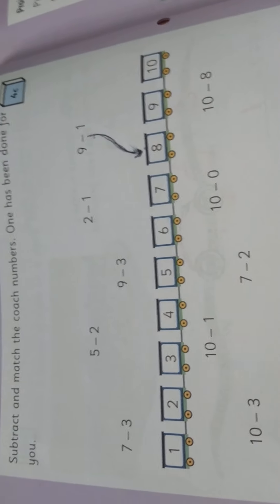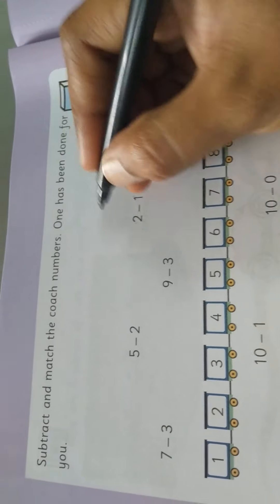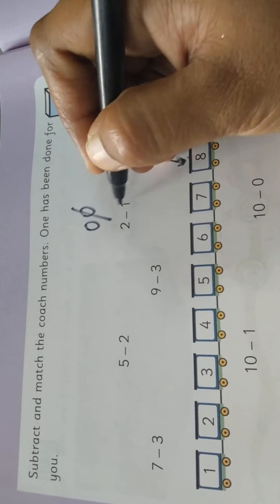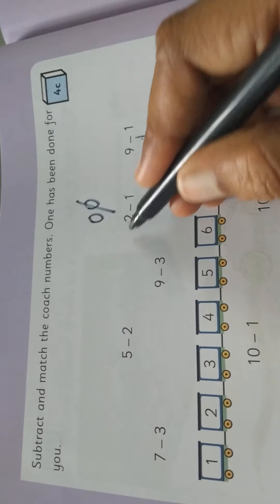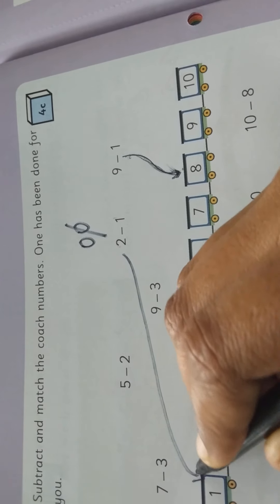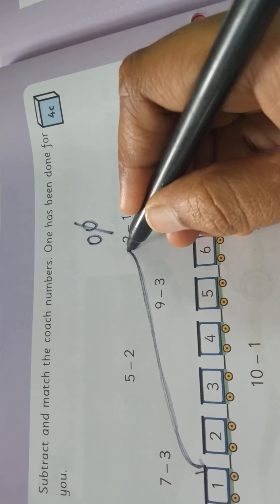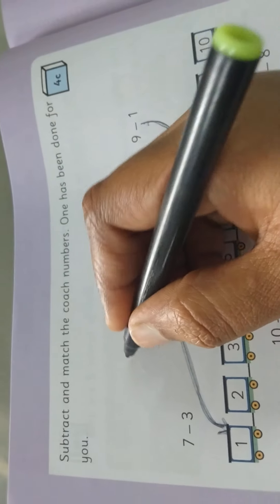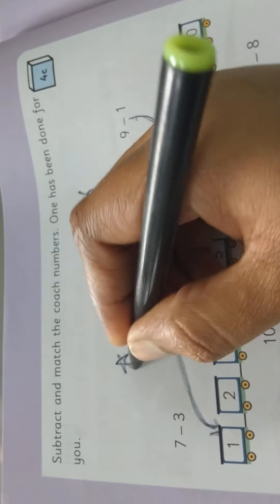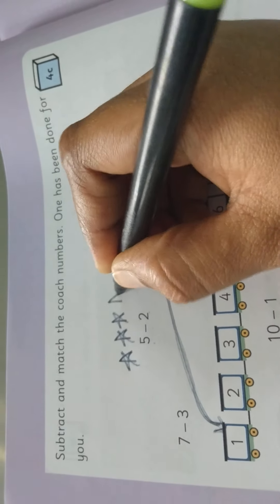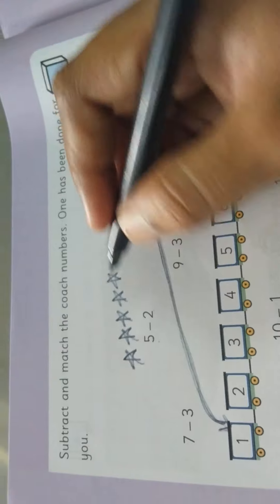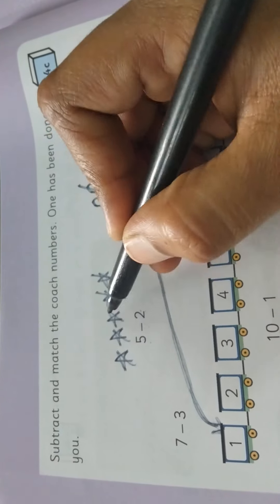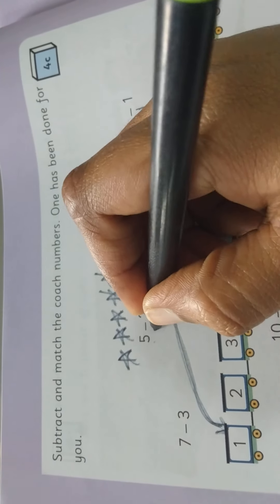Another example: 2 minus 1 — see here 2. For example, 2 beads I have drawn, we take away 1. What is the answer? 1. You want to match this to 1. See another example: 5 minus 2 — 5 stars I have drawn: 1, 2, 3, 4, 5. Taken away 2. What is remaining? 1, 2, 3. 5 minus 2 gives 3.